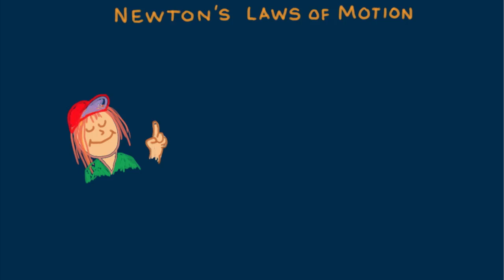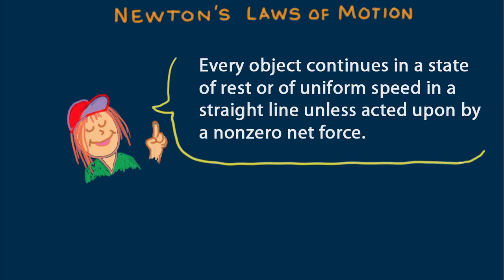Galileo showed otherwise and maintained that in the absence of forces, moving things will continue moving. The tendency of things to resist changes in motion was what Galileo called inertia. Newton refined this idea and made it his first law of motion, appropriately called the law of inertia.